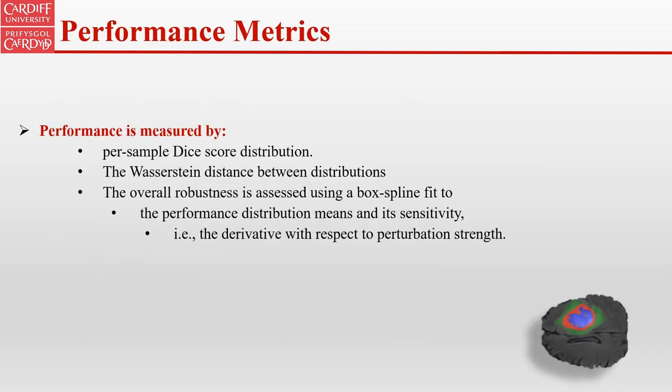Performance is measured by the per-sample Dice score distribution. We also used the first-order statistical distance between two consecutive distributions to indicate performance deterioration as perturbation strength increases. The overall robustness is assessed using a best-fit line to the performance distribution means and its sensitivity, where sensitivity refers to the derivative with respect to perturbation strength.